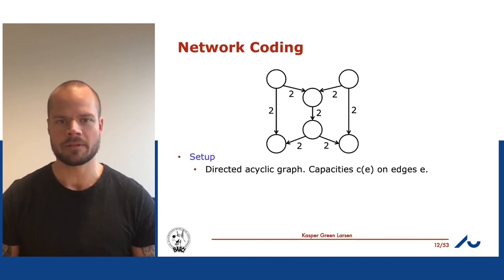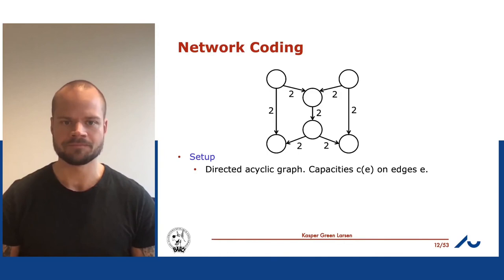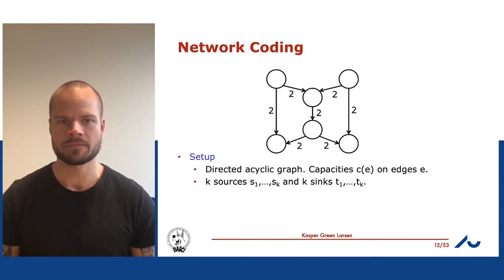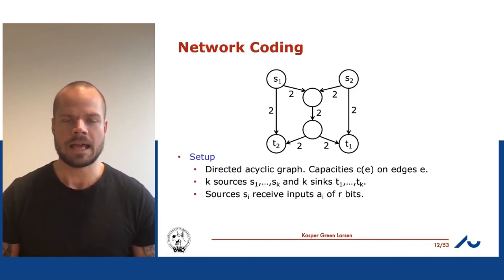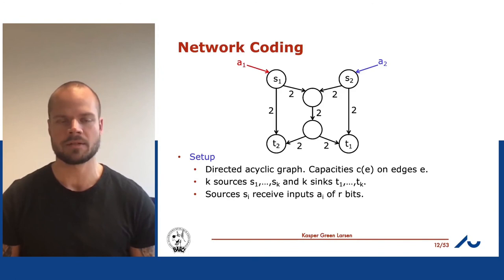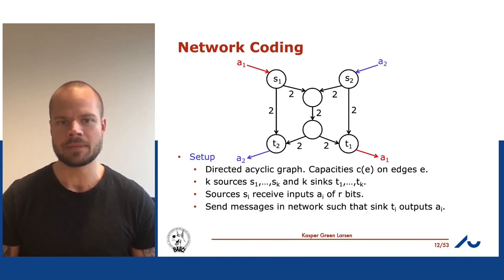In a network coding problem, we have a directed acyclic graph where each edge has a capacity — for instance, capacity two. We have k sources and k sinks; for example, source one and source two at the top, sink one and sink two at the bottom. Each source receives an r-bit input message: source one receives message a₁ and source two receives message a₂. The goal is for each source to transmit its message to the corresponding sink.